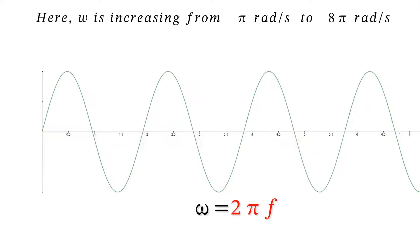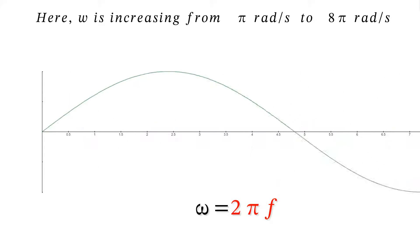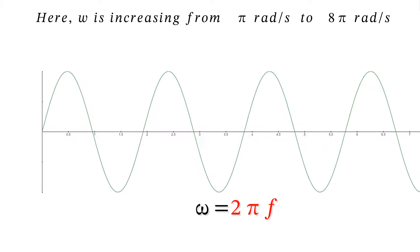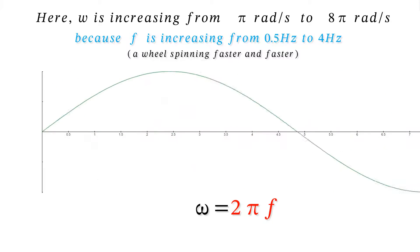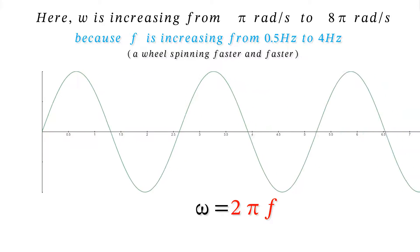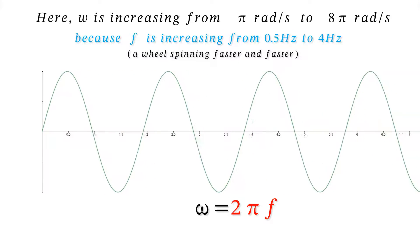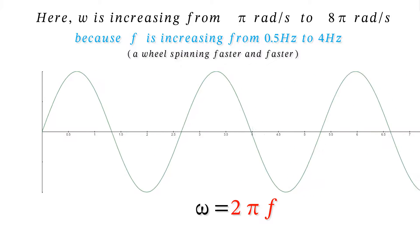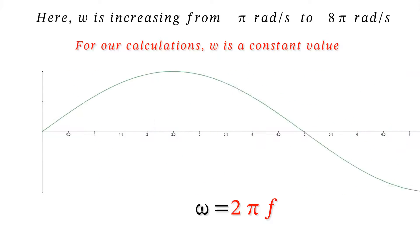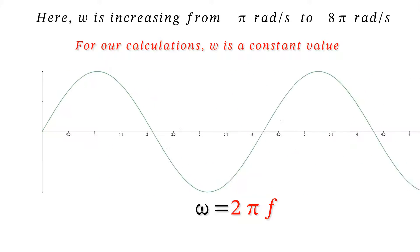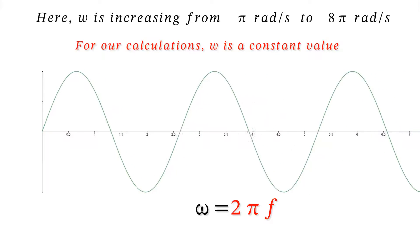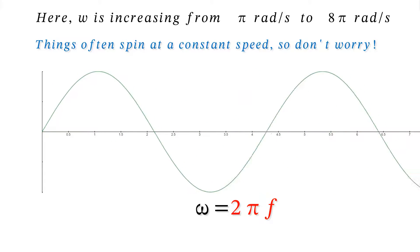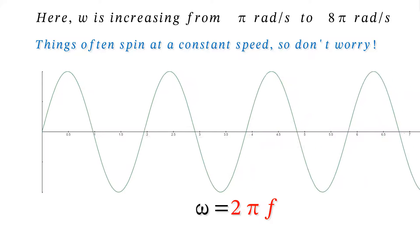Here omega is increasing because the frequency of spin is increasing, like a wheel spinning faster and faster. In real life, a lot of the time and for our calculations, omega is constant, and it's always equal to 2 pi f.